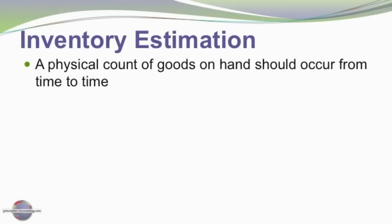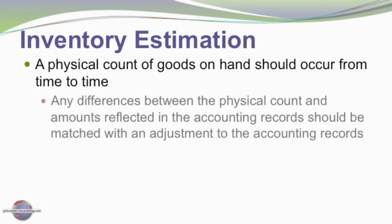From time to time, recognize that a physical count of inventory should occur to determine what goods are actually on hand at a particular business — probably at least once each year if not more frequently. Any differences between the physical count and the amounts reflected in the accounting records should be adjusted to reflect what the physical count shows, as the physical count is assumed to be correct.